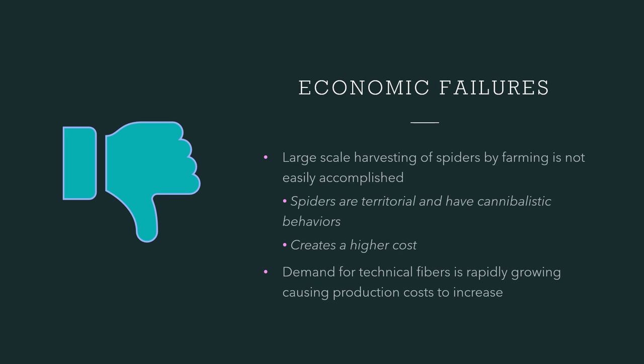Ways of manufacturing enough silk is not the only economic issue — the cost is also a factor. The global market demand for technical fibers is rapidly growing because of the essential usage of these products for industrial and consumer use. The cost of production has increased from $133 billion in 2012 to $160 billion in 2018 and will continue to increase until spider silk can be mass produced in a smaller amount of time.